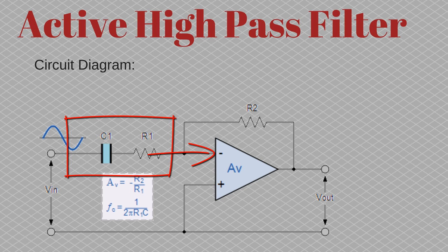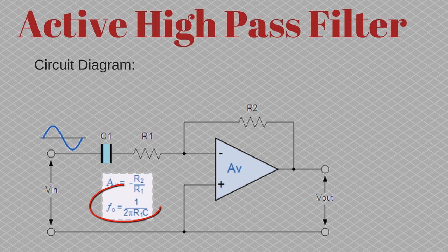The cutoff frequency of such a filter is given by 1 by 2πR1C1, and the gain from the operational amplifier in the inverting mode is minus R2 by R1. Note one thing from this diagram: I'm using the operational amplifier in the inverting mode, so my output signal would be out of phase to the input signal.